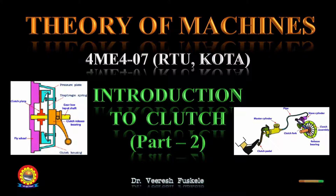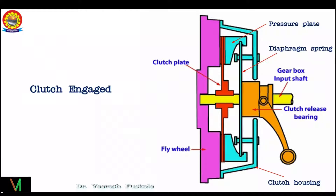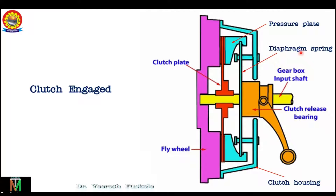Now we'll look at the clutch operation. This is how the various components are arranged. This is a very simple schematic. The red one is the clutch plate, this is the flywheel, this is the pressure plate, this is a spring called the diaphragm spring, this is the release bearing, and this is the clutch housing and the input gear shaft — the shaft which leads to the transmission.